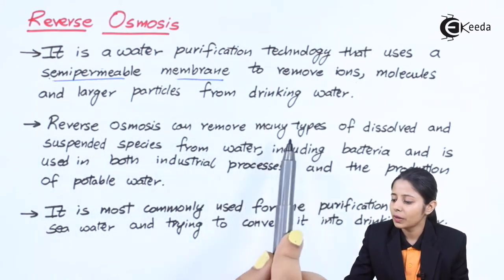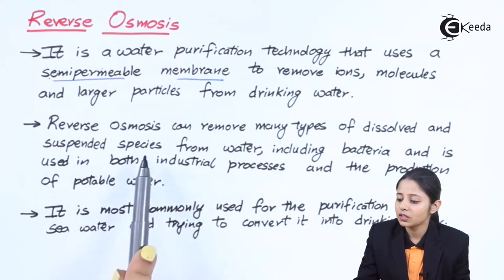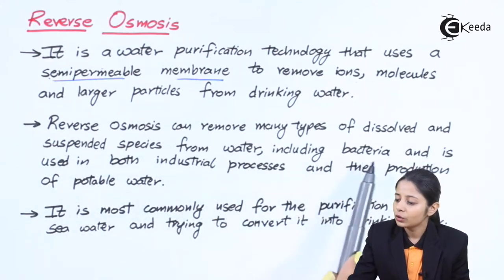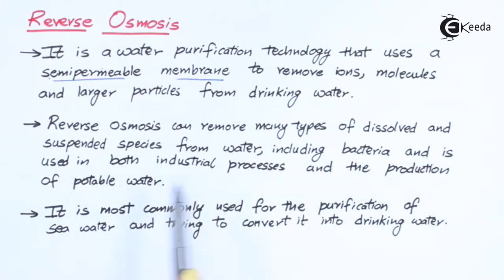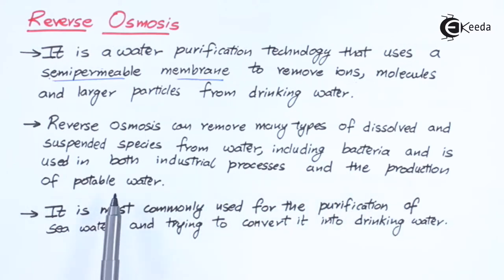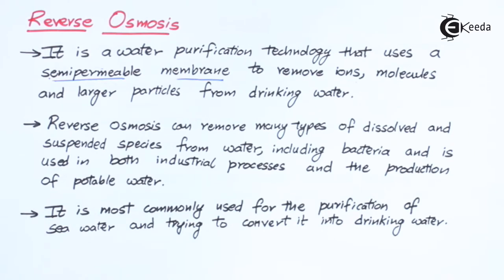Reverse osmosis can remove many types of dissolved and suspended species from water, including bacteria, and is used for both industrial processes and in the production of potable water — that is, drinking water. The water obtained after this process is so pure and clean that we can actually drink it. This pure water also does not contain any kind of salts or ions, which is why it can be easily used for many industrial processes.